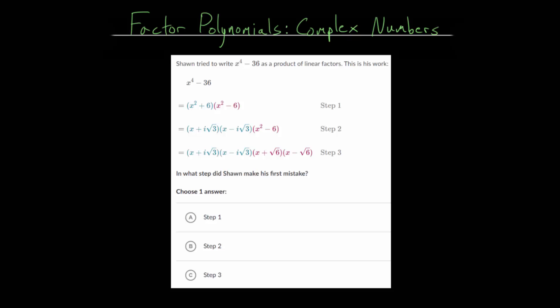In this video, I'd like to continue talking about factoring polynomials with complex numbers by looking at one more example problem. And with this problem, Sean tried to write x to the fourth minus 36 as a product of linear factors. And we have his work below. And with this problem, we need to figure out where Sean made a mistake.